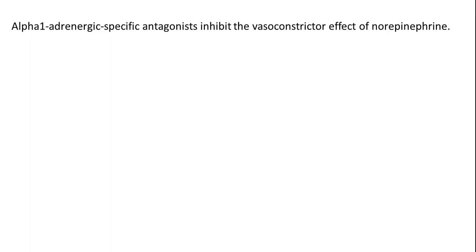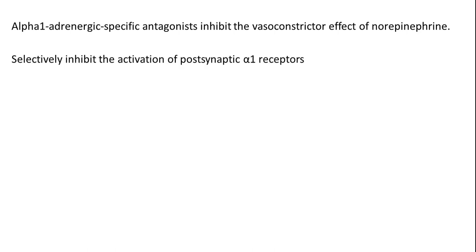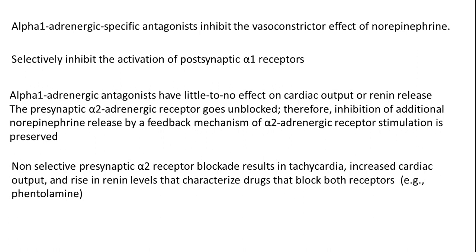Alpha-1 adrenergic specific antagonists inhibit the vasoconstrictor effect of norepinephrine. They selectively inhibit the activation of post-synaptic alpha-1 receptors. Because cardiac smooth muscle is under the control of beta receptors, a purely selective alpha-1 antagonist has little or no effect on cardiac output or renin release. The pre-synaptic alpha-2 adrenergic receptors act as a feedback mechanism that inhibits additional norepinephrine release.